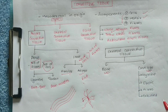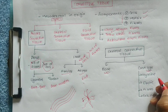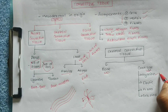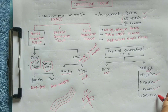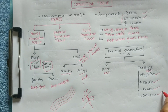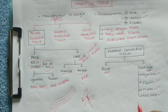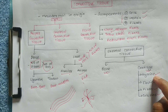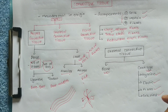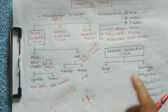Cartilage types include hyaline cartilage, elastic cartilage, fibrocartilage, and calcified cartilage. Cartilage has a hollow cavity structure. It is compact and spongy, and lighter in weight compared to bone.